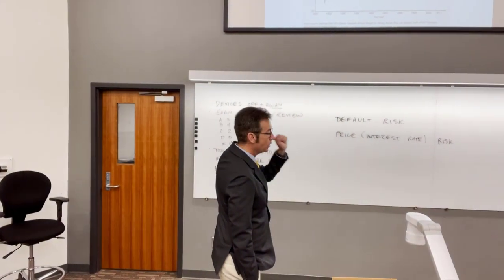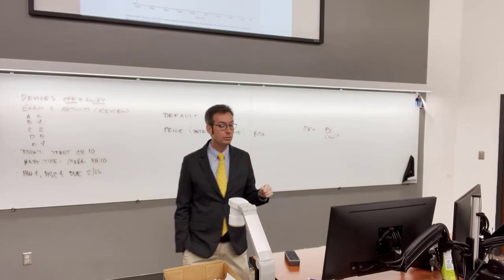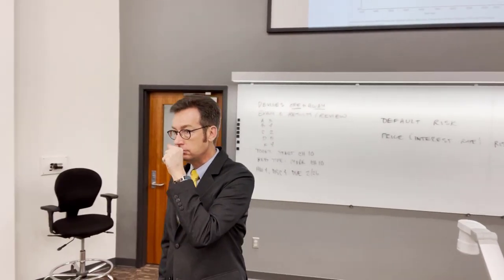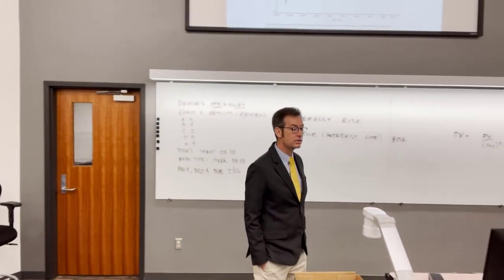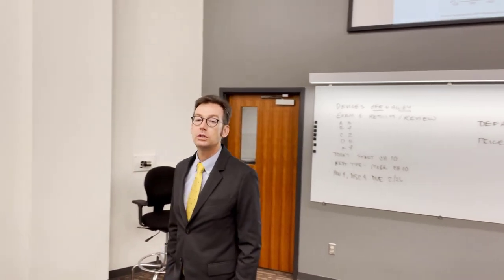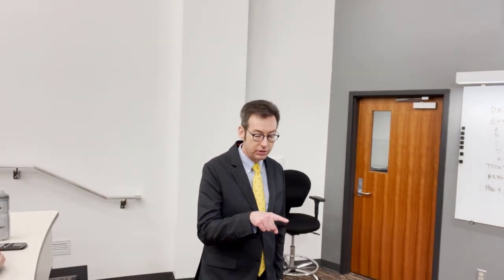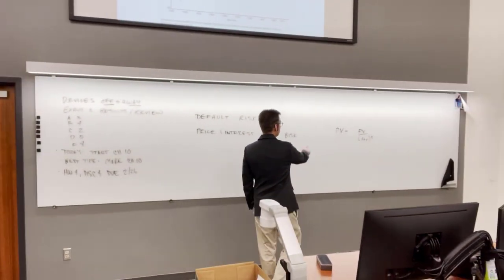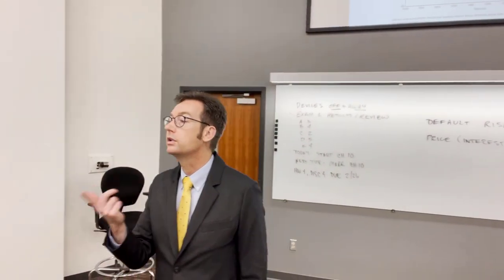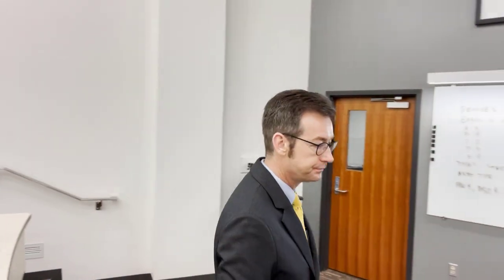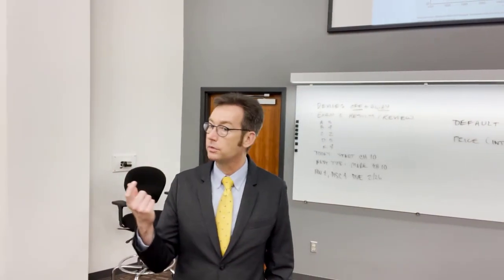Compare the roughness of the long-term government bond line to the Treasury Bill line — the long-term government bond line is rougher. This roughness is a manifestation of risk. Risk is the uncertainty about what the price of something will be tomorrow. The Treasury Bill line is smooth because we're pretty sure what it'll be worth tomorrow. The more uncertainty, the rougher the line — the greater the risk.